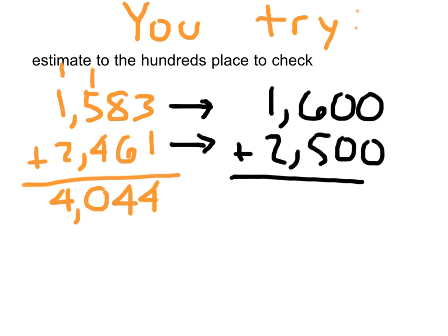This is what you should have come up with. 1,583 to the nearest hundredth place is 1,600. 2,461 to the nearest hundredth place is 2,500. If we add those together carefully, we get 4,100. We went up there by 17, we went up there by 39. Sure, it makes sense then that our estimate is higher. This here is our actual, and this here is an estimate for that addition problem.